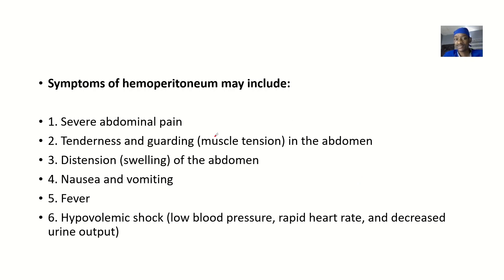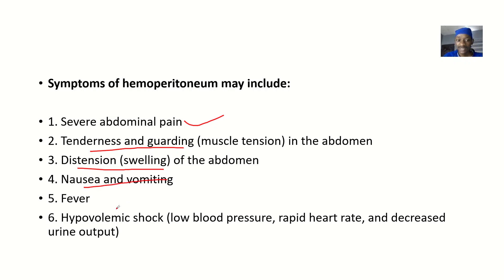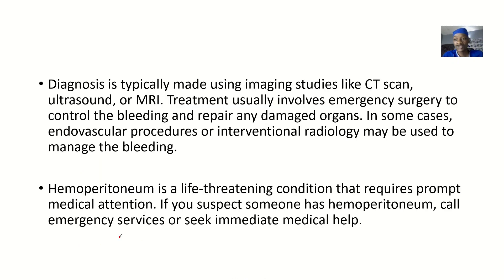The symptoms include severe abdominal pain — this concept first came up when reading about acute abdomen. There will also be tenderness and guarding, which is muscle tension in the abdomen, distension or swelling of the abdomen, nausea and vomiting, and fever. It can also result in hypovolemic shock due to reduced volumes of blood, leading to low blood pressure, rapid heart rate, and decreased urine output as the body tries to compensate.